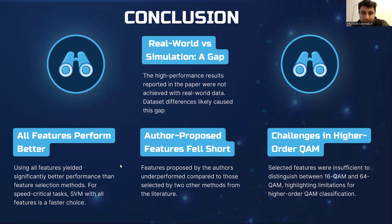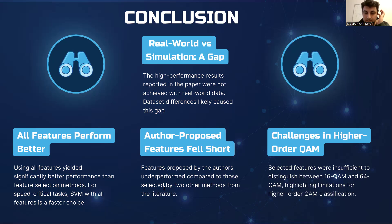In conclusion, there is a noticeable gap between the performance of the neural network model in the simulation environment and on real-world data. The authors claim their proposed feature selection method yielded excellent results, but our experiments show the opposite. When applied to our real-world dataset, it underperformed compared to the other methods from the literature — the conventional way and the mutual information way. There is a clear difference between the theoretical model and the experimental result. Additionally, both the neural network and SVM failed to distinguish higher-order QAMs.